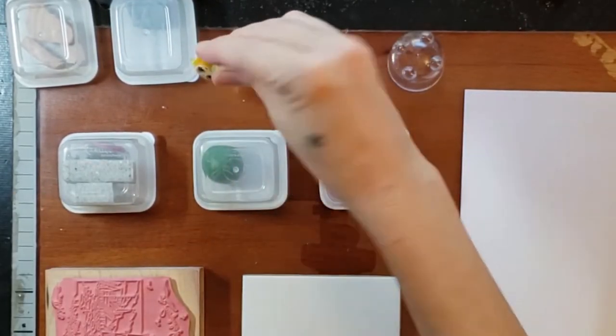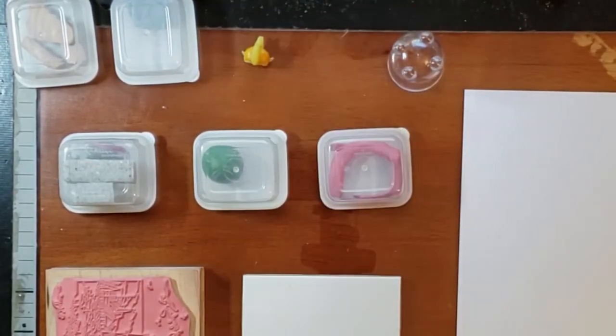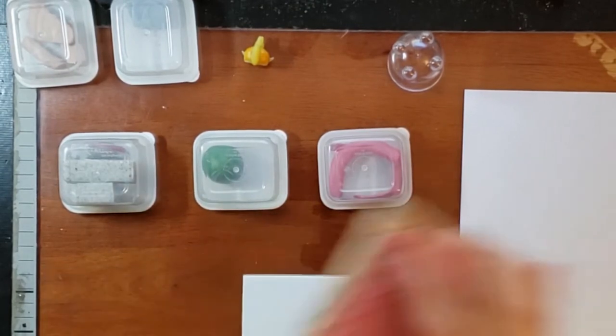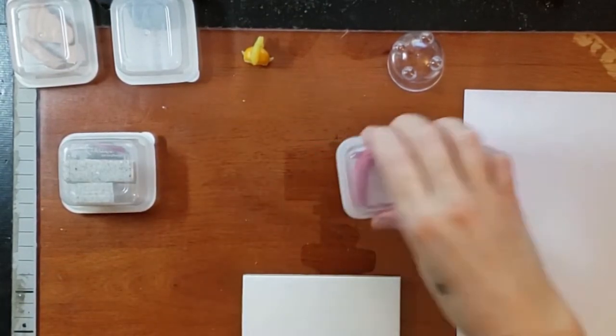I found these bug collector containers at the dollar store quite a while ago and had them in the drawer. When we got Cleo, I was thinking she was the perfect size to go in there.